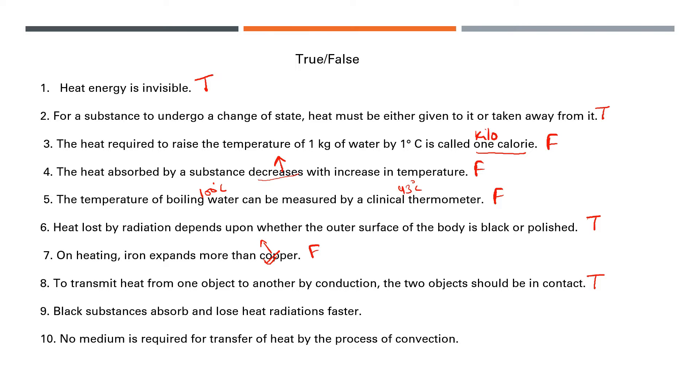Black substances absorb and lose heat radiation faster. Yes, this is also true. No medium is required for transfer of heat by the process of convection. No, we require a medium, so this is false. Moving to next slide.